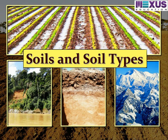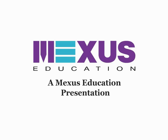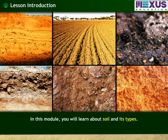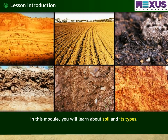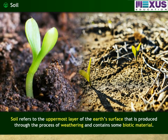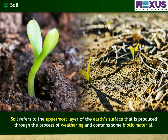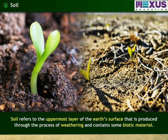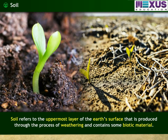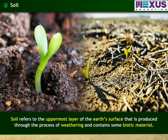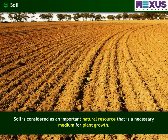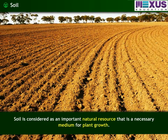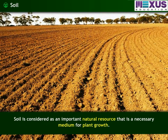Soils and Soil Types. In this module, you will learn about soil and its types. Soil refers to the uppermost layer of the earth's surface that is produced through the process of weathering and contains some biotic material. Soil is considered an important natural resource that is a necessary medium for plant growth.